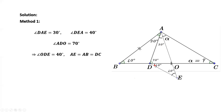If this angle is 40 degrees and this angle is 40 degrees, triangle ODE is isosceles. That means OD equals OE. From the given condition, we know AB equals DC, and AE equals AB. This implies AE equals DC.